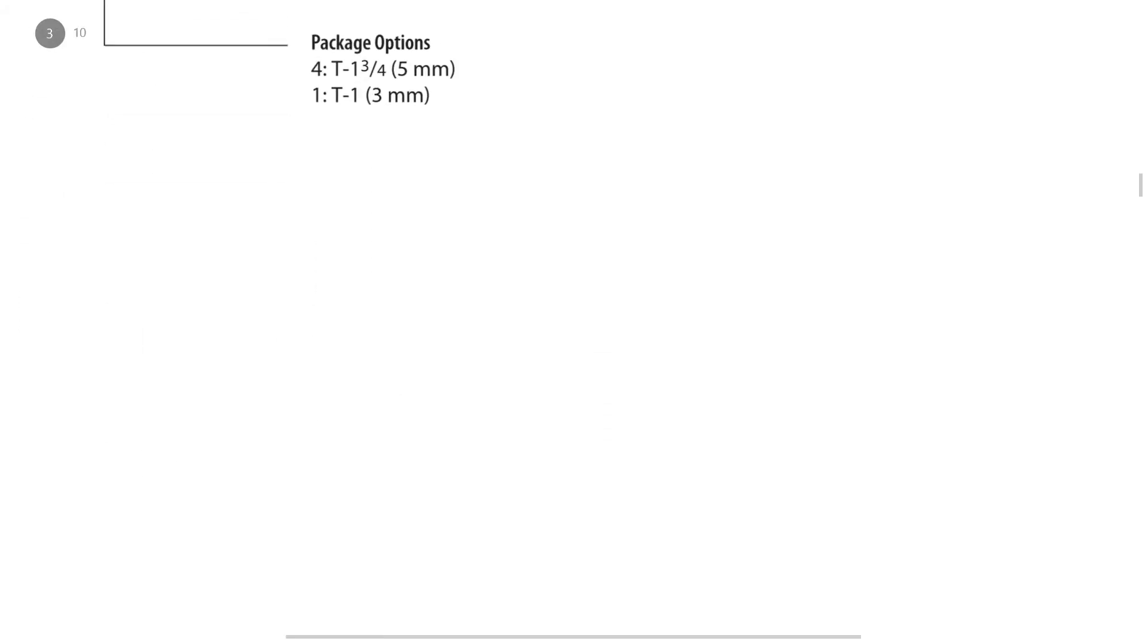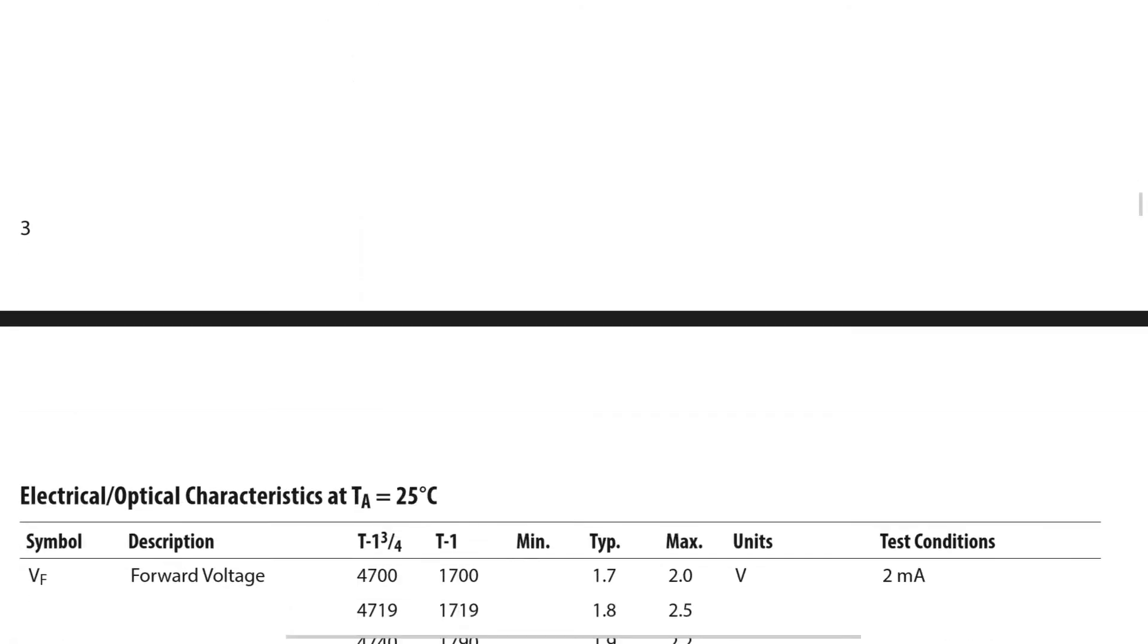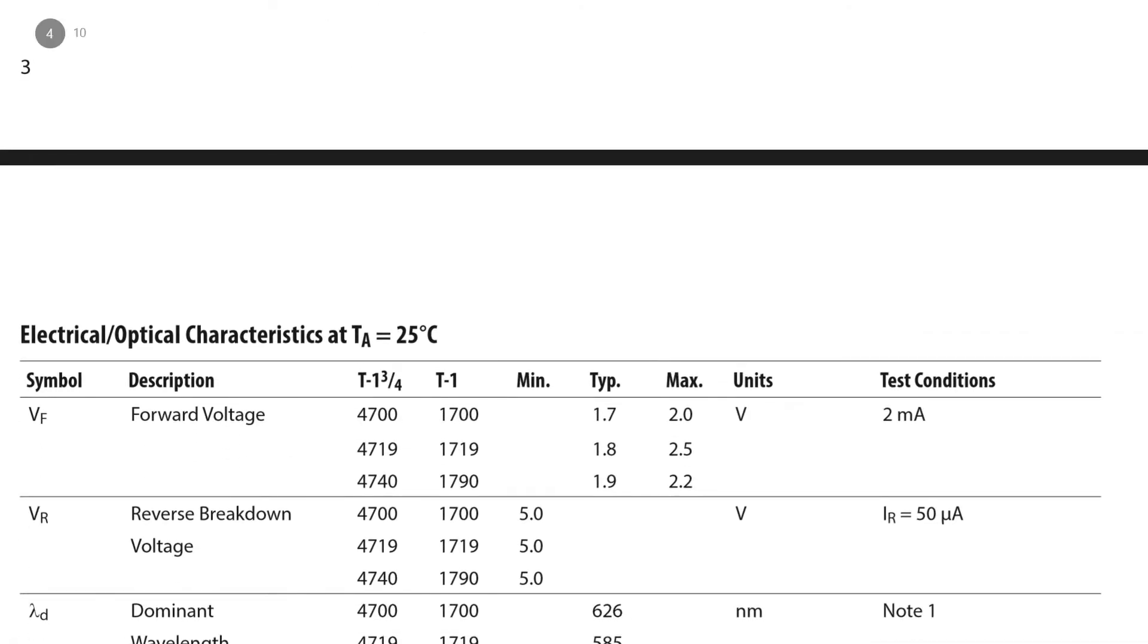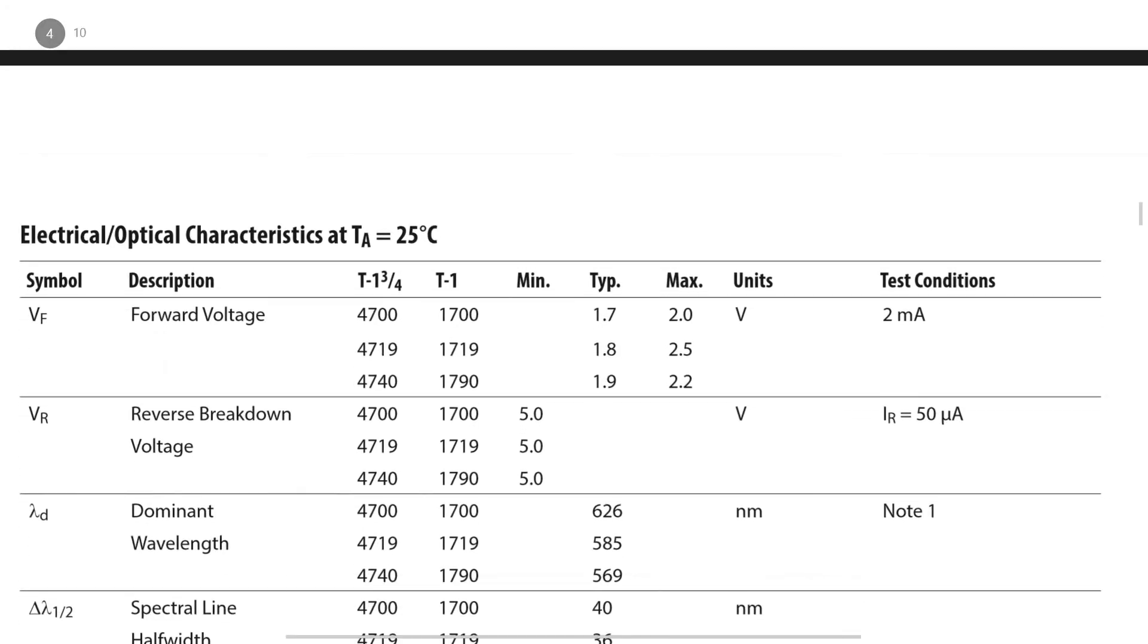And so again, we're looking for VF, which is the forward voltage, and we're looking for IF, which is the forward current. There we go. VF, which is the forward voltage. And I can see that one of the operating points for my red LED will be 1.7 volts and 2 milliamps.